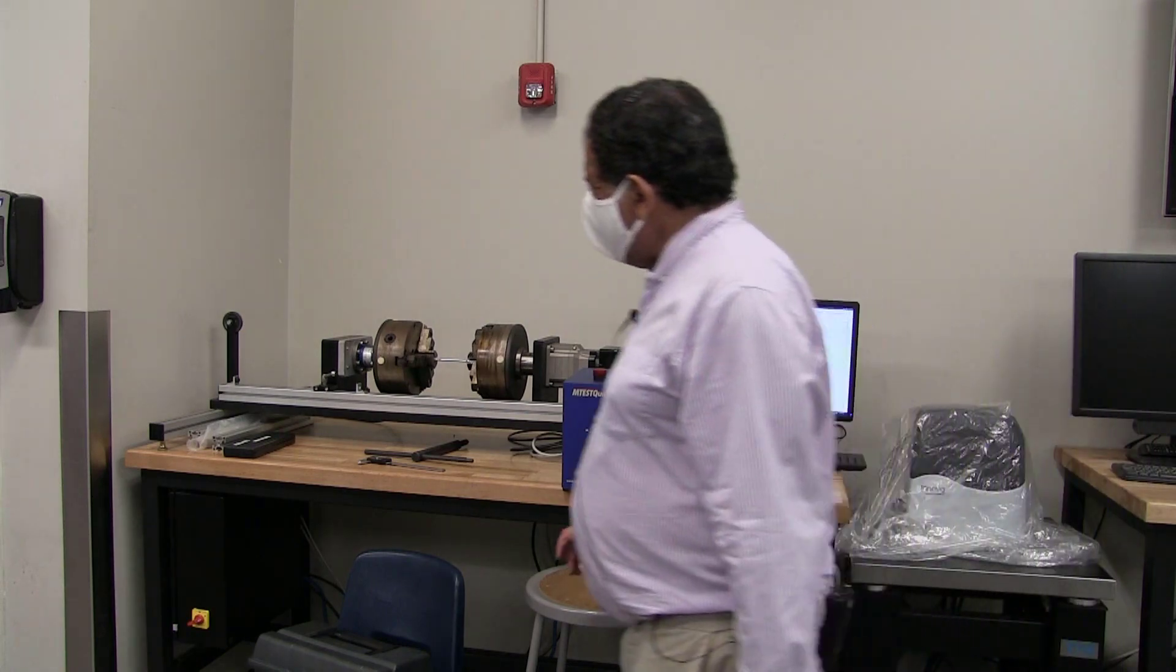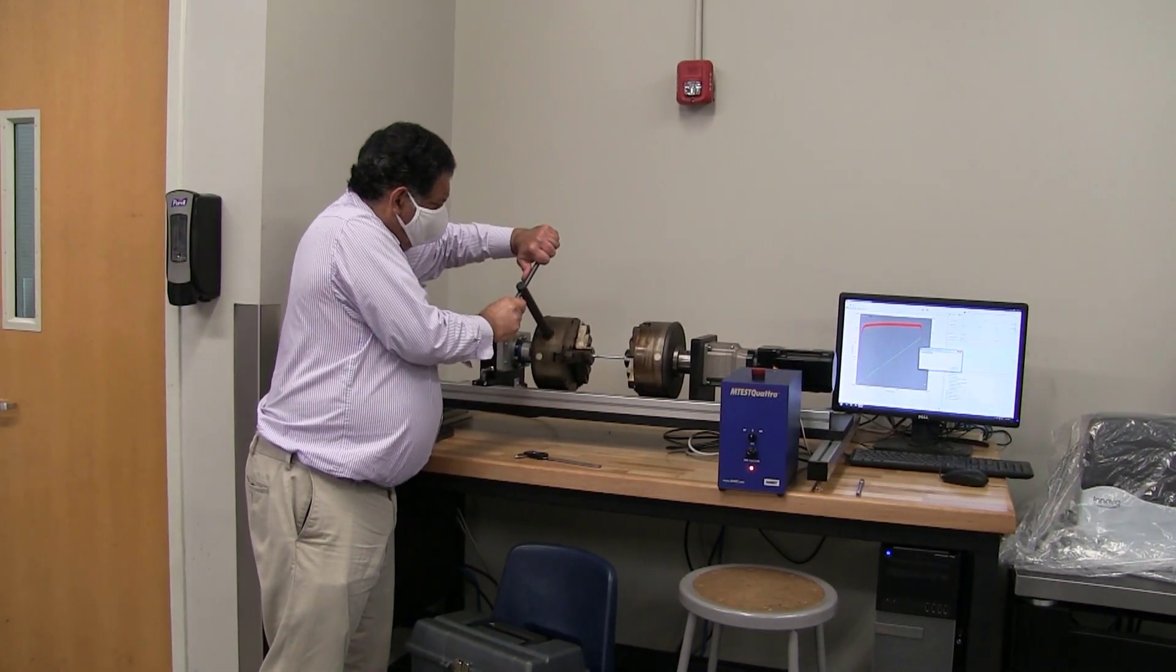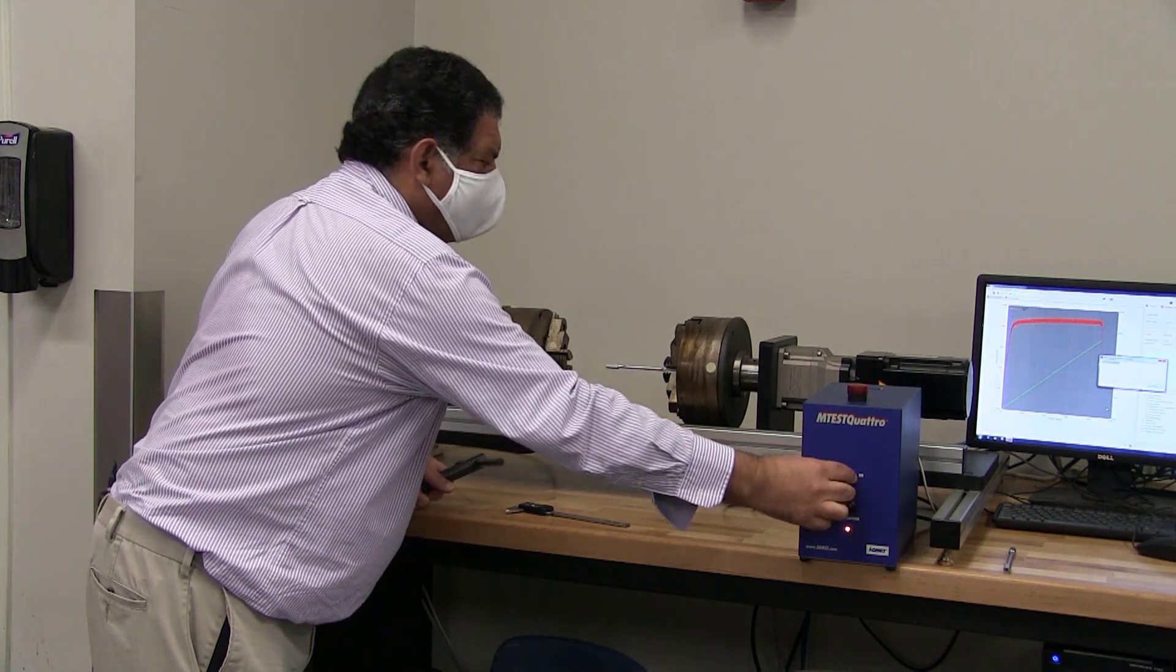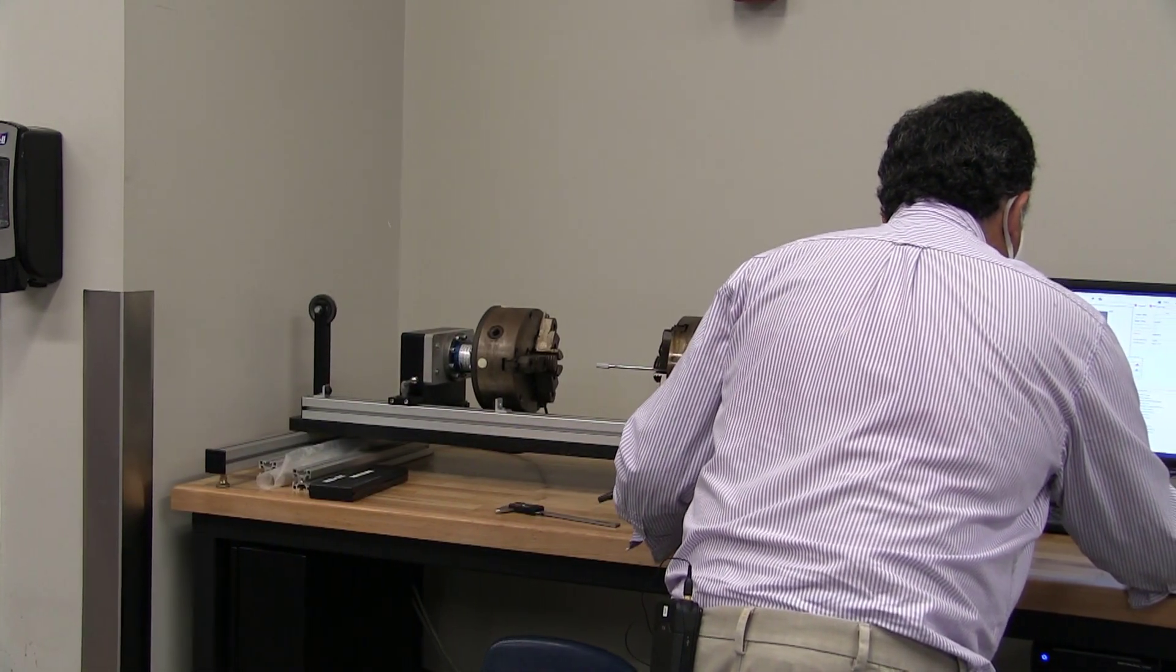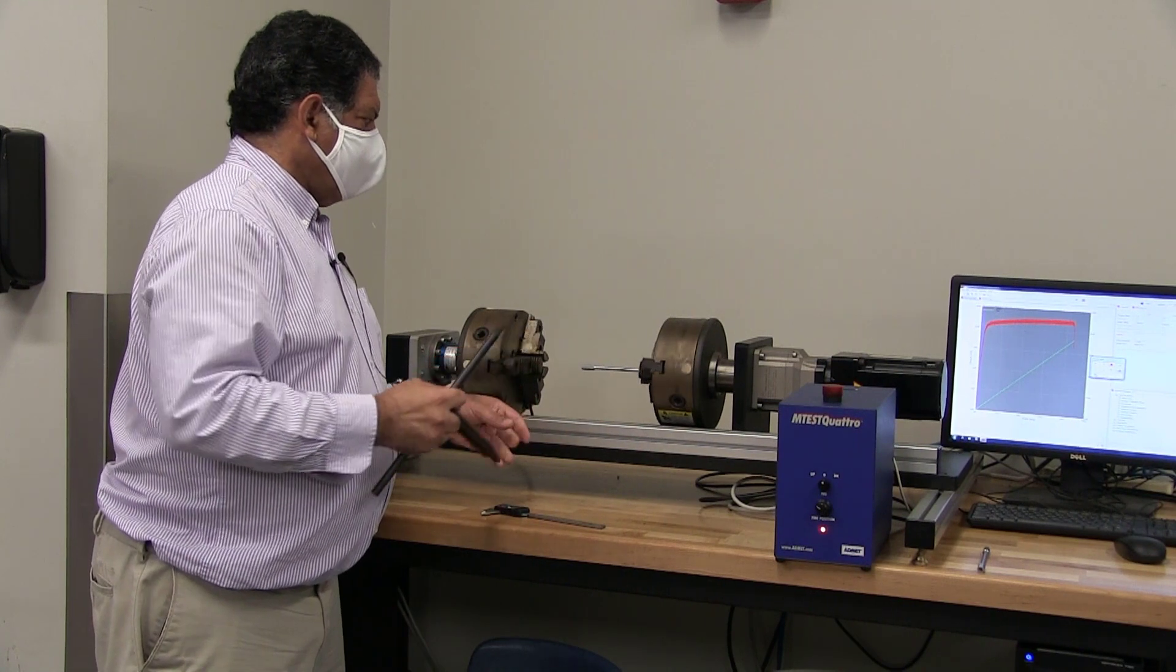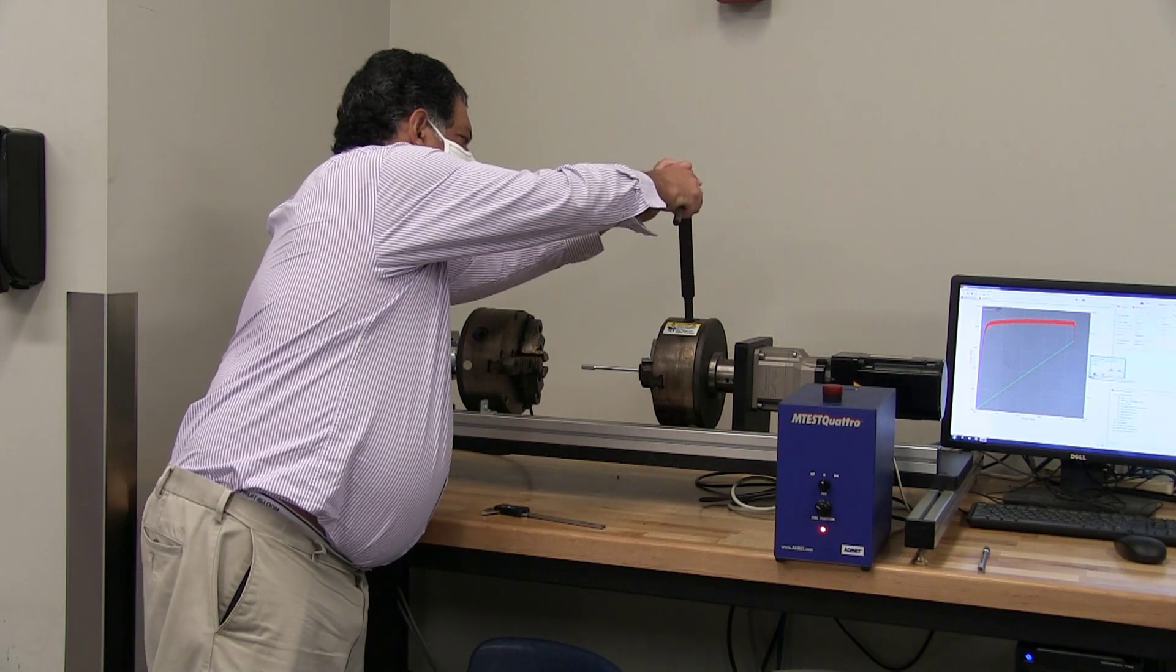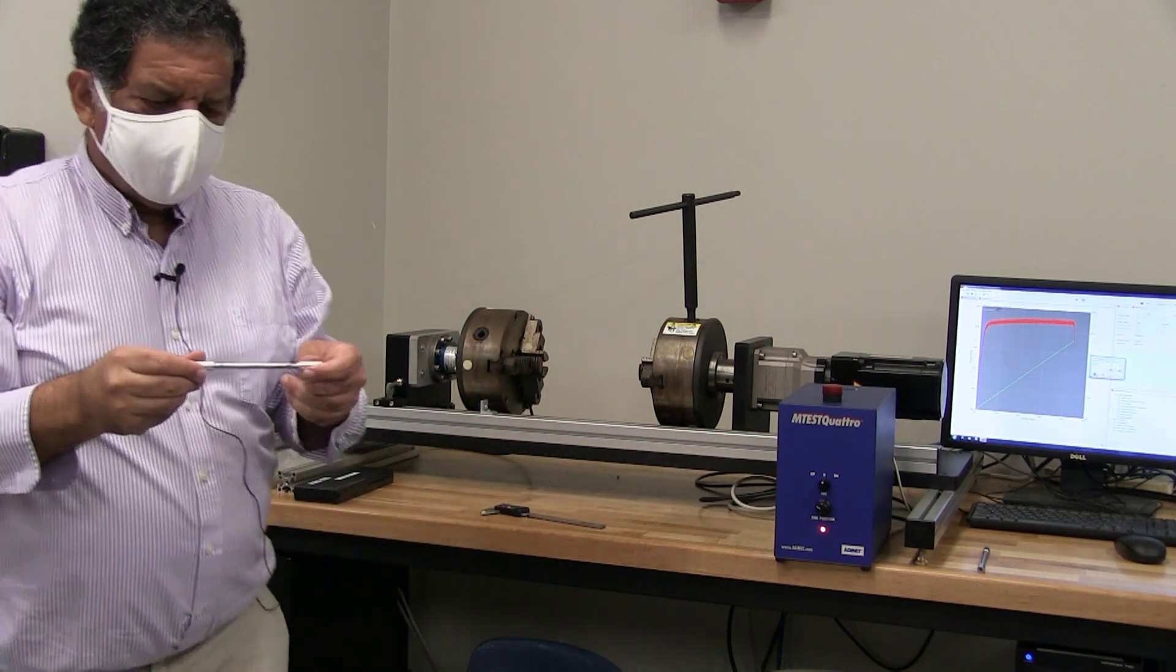At this point, I'm going to unload the specimen by undoing the jaws and then backing off the chuck over here. Then I'm going to jog this one back to the home position. Actually, let's go back to the home position. It's going all the way back around. And then I'll undo this jaw.